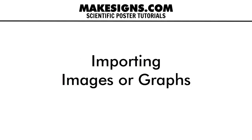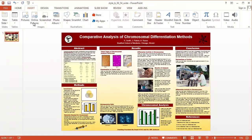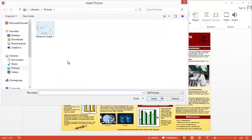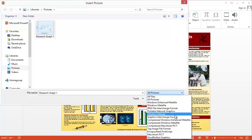Place the cursor at the position in your document where you want to insert the picture. On the Insert menu, point to Picture. This will open the Insert Picture dialog box, where you can locate and select the graphics file you want to import. You can import graphics files in a wide variety of formats, for example BMP, WMF, GIF, and JPEG.